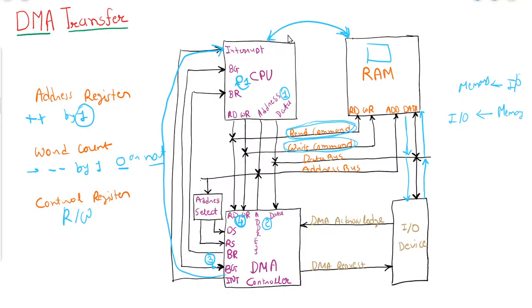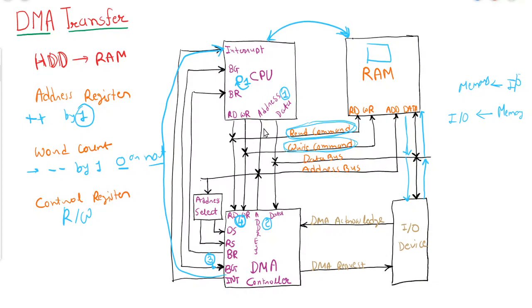DMA has many useful applications. It can be used for faster data transfer between a hard disk and RAM. It can also be useful in updating the display on an interactive terminal — for example, when the RAM is connected to a monitor via DMA, the CPU updates the data and informs the DMA, so the new data is sent to the monitor and the updated screen is displayed. This is how DMA transfer works. In the next tutorial, we will discuss what is an input/output processor. Thank you.